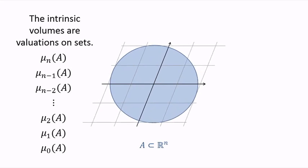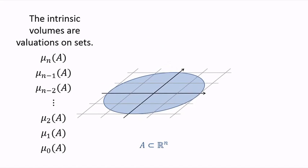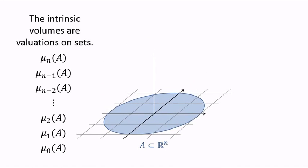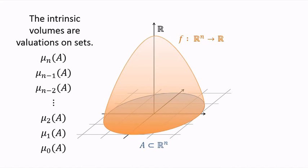Now suppose we change our perspective from sets to functions over sets. Let f be a real valued function defined on A. Are there intrinsic volumes of functions? In other words, what is the k-dimensional size of f?